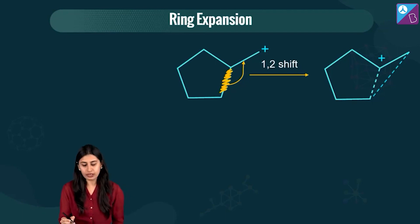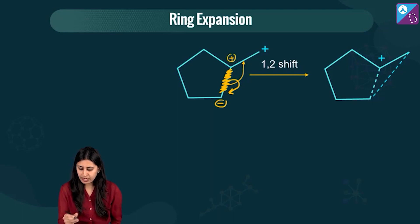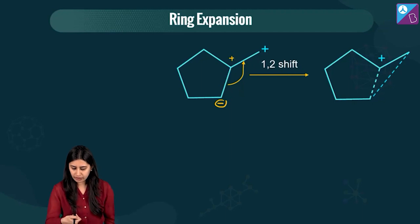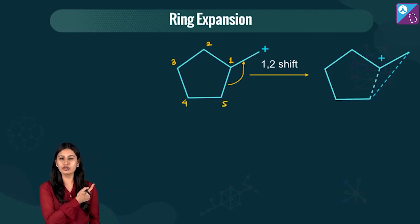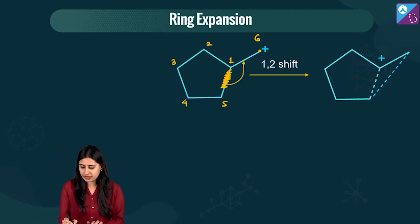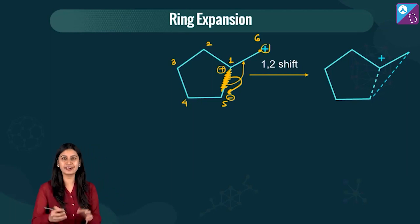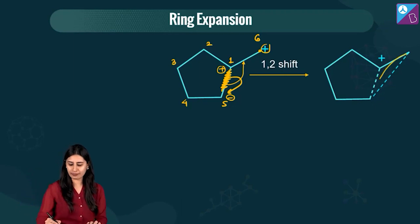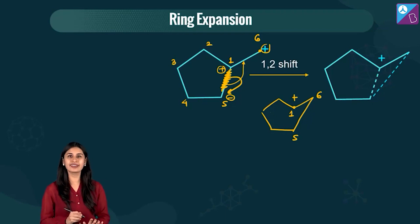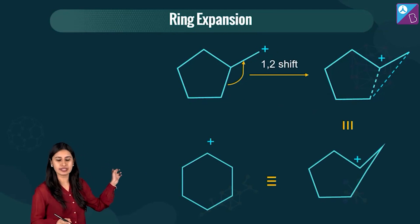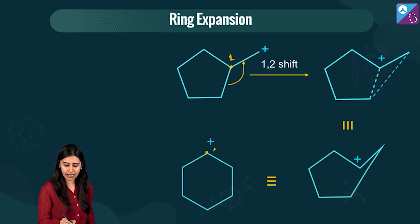Break this bond — a minus appears here and a plus appears here. Let me number the carbons: carbon 1 through 5 in the cyclopentane ring, and carbon 6 is the one bearing the plus. Breaking the bond between carbon 1 and 5 gives a minus at 1 and a plus at 5. Opposite charges attract, forming a new bond between carbons 5 and 6, resulting in a six-membered ring with the positive charge now on carbon 1.